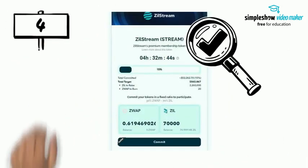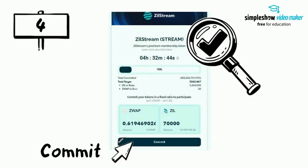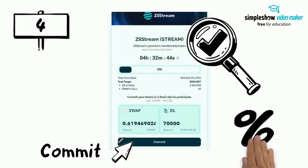Step 4: Review everything one more time, and if all is good to go, click on the commit button to commit to the token sale. Take note that the overflow method is being used. Hence, your final allocation is based as a percentage of your commitment over the overall total funds committed by everyone. There's a possibility that you might not qualify if your amount is too negligible.